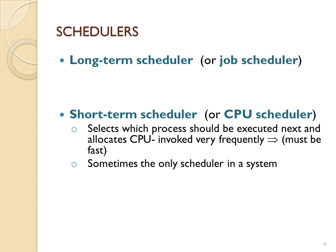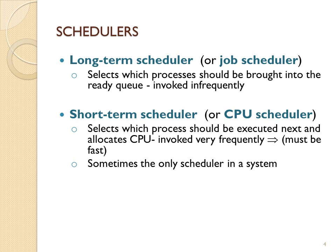Some operating systems will add an additional unit called the long-term scheduler. This scheduler decides whether or not to admit processes into the system. When a program goes from an inactive entity to a process, the operating system creates a PCB and decides whether it can be admitted. If you don't have a long-term scheduler and there are no resources, the process simply cannot be admitted.